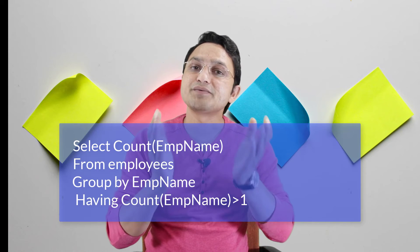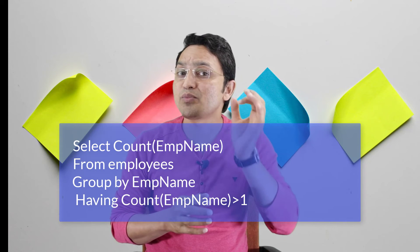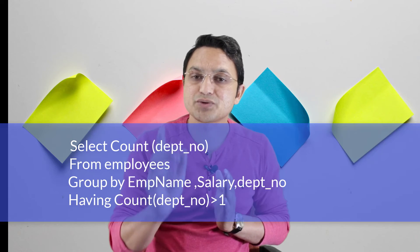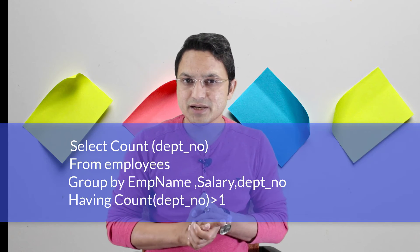I hope you have understood. Let me summarize: if somebody asks you to give the duplicate names from the employee table, then you use the first query. If somebody asks you to give the complete query which will identify the complete row that is duplicate, then you write the second query. This is clear, and this is how you can write the queries.